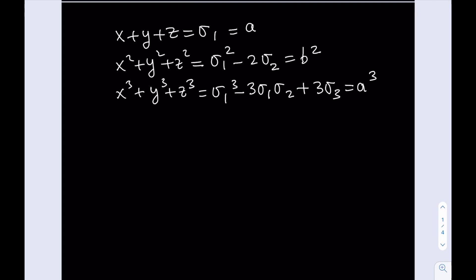So we now have a system of equations in sigma 1, sigma 2, and sigma 3, and we're going to go ahead and solve the system. If you substitute sigma 1 into the second equation, you're going to get A squared minus 2 sigma 2 equals B squared. From here, solving for sigma 2 gives us A squared minus B squared over 2.